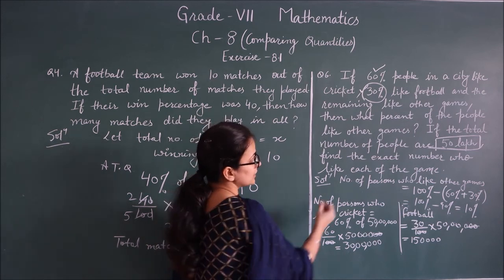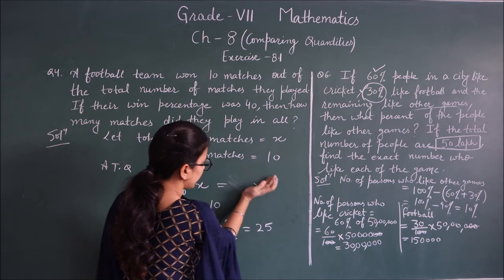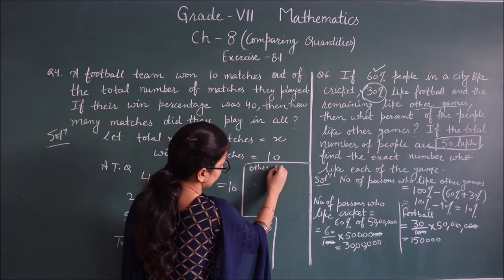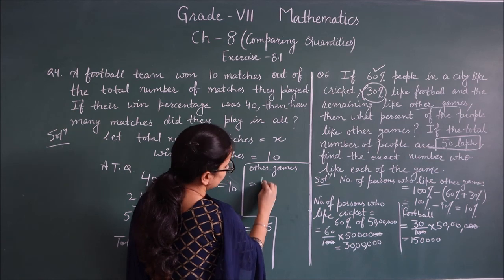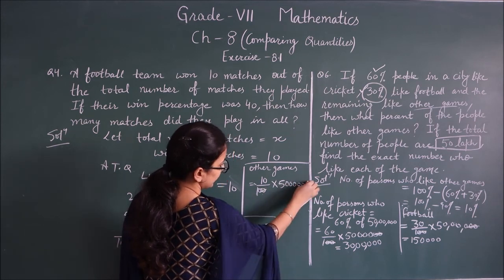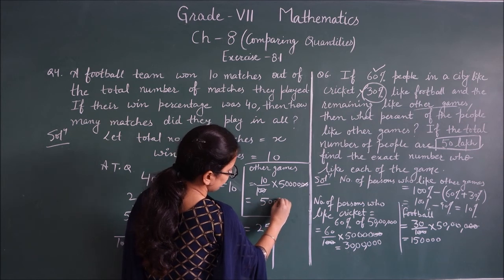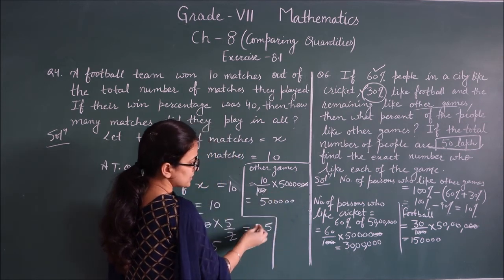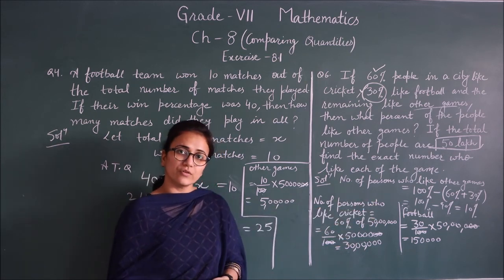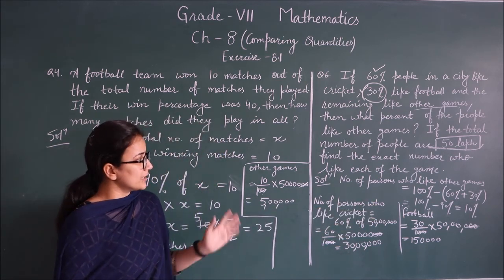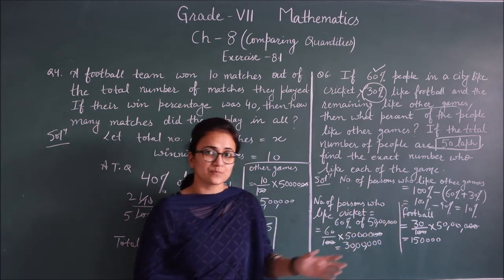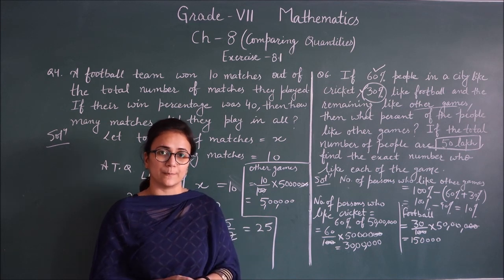Number of persons who like other games = 10% of 50 lakh = 10/100 × 50 lakh = 5 lakh. So 30 lakh like cricket, 15 lakh like football, and 5 lakh like other games. You can complete this exercise in your fair notebook. In the next class we will start the next exercise. Thank you.